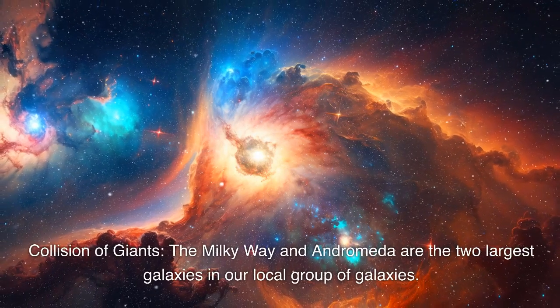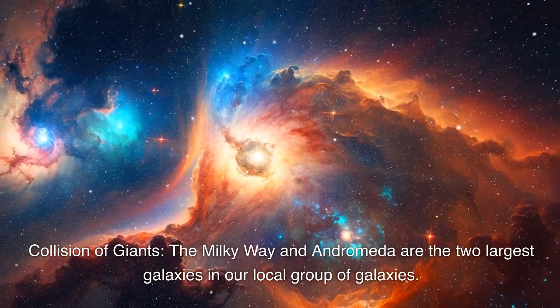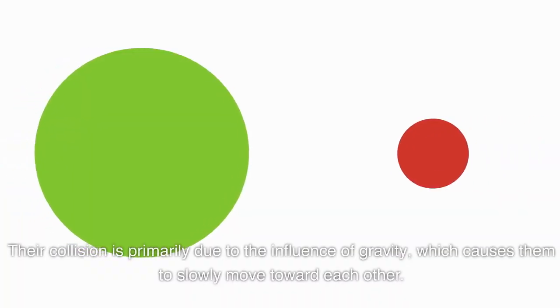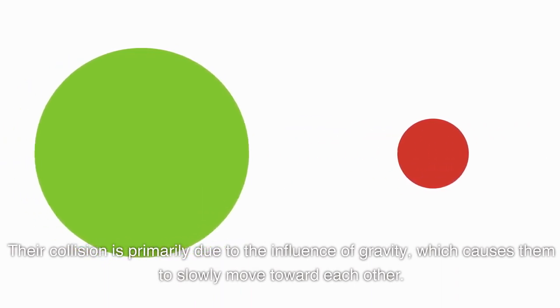Key points. Collision of giants. The Milky Way and Andromeda are the two largest galaxies in our local group of galaxies. Their collision is primarily due to the influence of gravity, which causes them to slowly move toward each other.